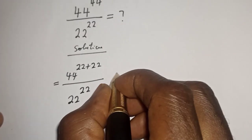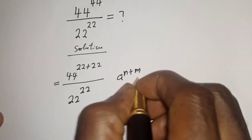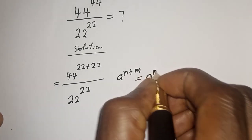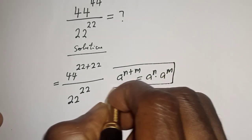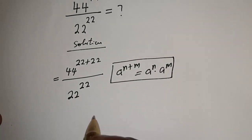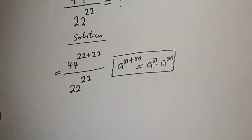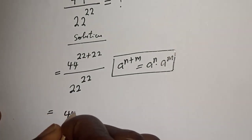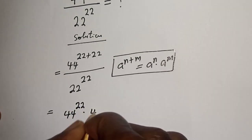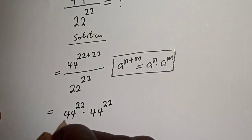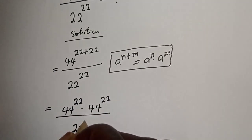Take note of this exponential rule: a raised to power n plus m is equal to a raised to power n multiplied by a raised to power m. Then 44 raised to power 22 plus 22 can be written as 44 raised to power 22 multiplied by 44 raised to power 22, divided by 22 raised to power 22.